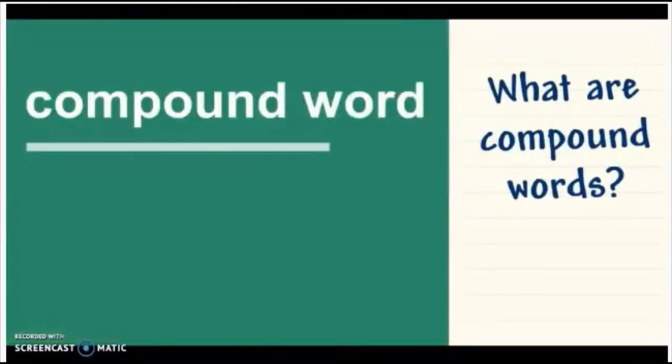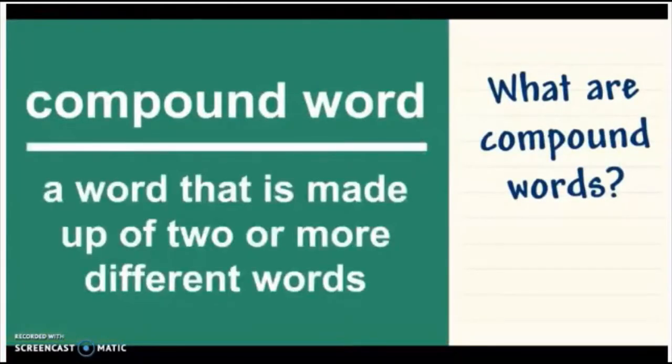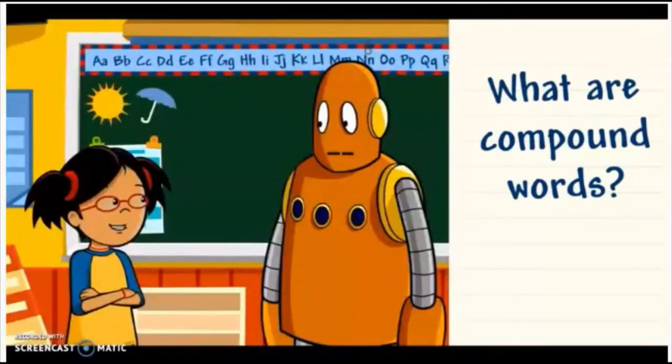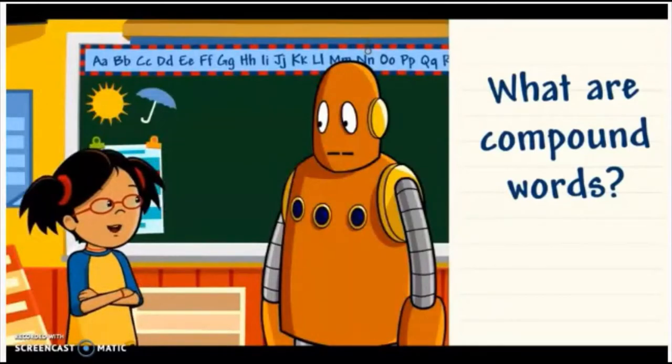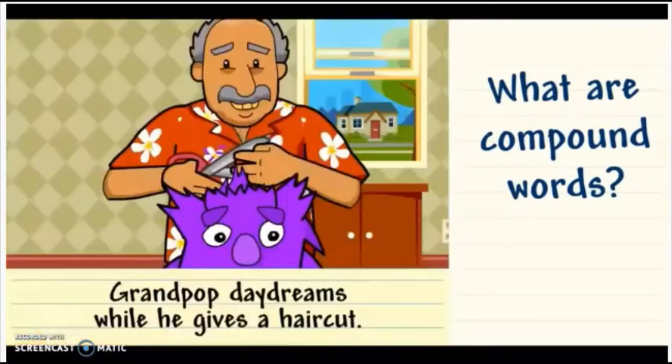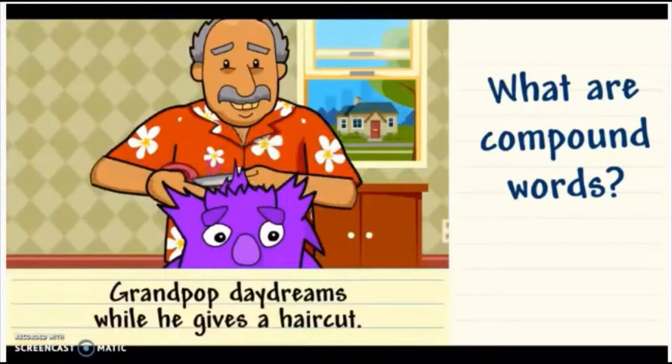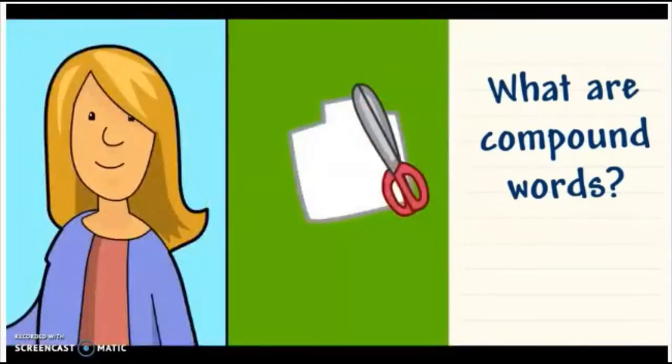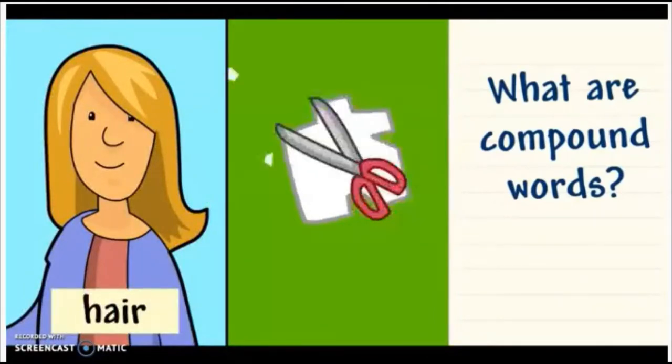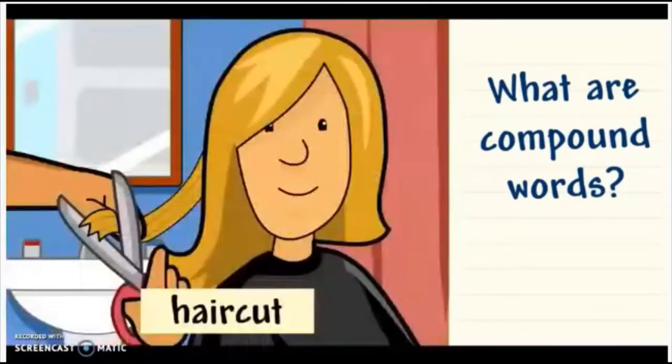A compound word is a word that is made up of two or more different words. Different words are joined together to make a new word with a different meaning. In this sentence, haircut is a compound word. It's made up of the word hair and cut. When you join the two words together, you get one word that means the cut and style of hair.